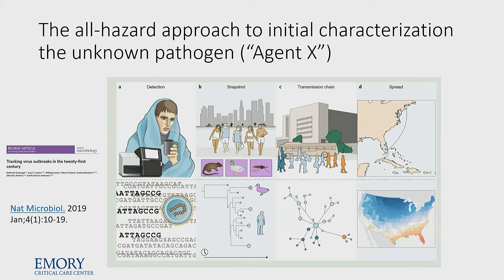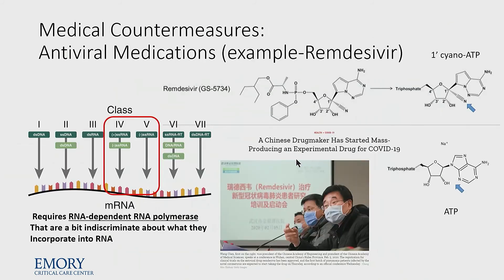This leads to why an all-hazards approach has been developed for initial characterization of an unknown pathogen. A review in Nature Microbiology from about a year ago wrote the playbook for what's done with a modern viral epidemic. Initially there's detection and identification of the pathogen through nucleic acid sequencing, then a snapshot of who's gotten the virus and what wildlife they've been exposed to — because this is all based in new zoonotic diseases. The transmission chain is identified, and then the spread is mapped and predicted. Very much the playbook followed over the past six weeks.